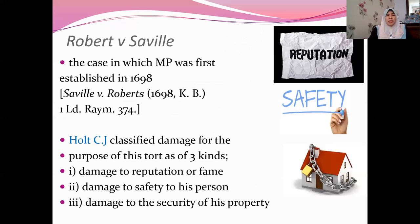In a very classic 1698 common law case — among the first cases in which malicious prosecution was established — the judge, Holt C.J., classified damage for the purpose of malicious prosecution into three kinds: first, damage to reputation or fame, like the case of the lawyer we discussed; second, damage to safety to his person; and third, damage to the security of his property. It could be any or all three kinds.